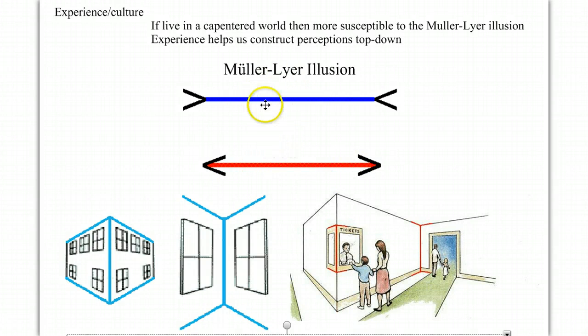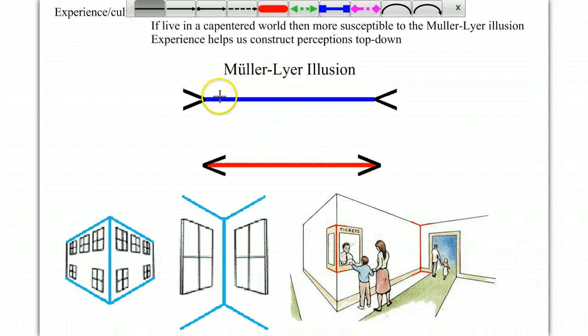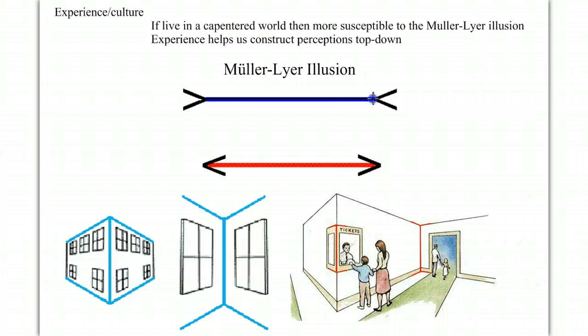Which of these lines is longer, the red one or the blue one? Well, if you take out your ruler and measure, which we will, that line is that long. And, as you probably expected by now, that line is the same length.